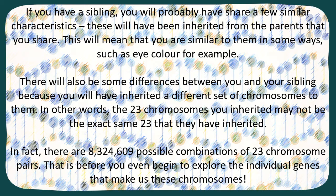Your brothers and sisters all have inherited genes from the same parents, but their combination will be different because it's not always the same selection. So you're not going to have an identical sibling. When we're talking about all the combinations of 23 different chromosome pairs, there are 8,324,609 possible combinations — and that's before you even start to think about the genes within the chromosomes. Crazy.